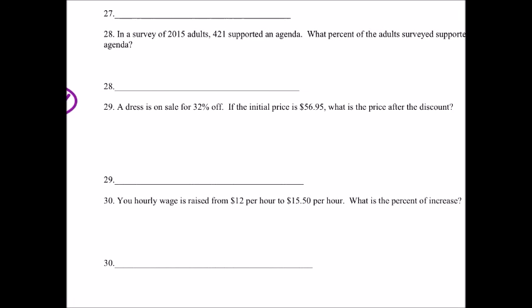Problem 29: A dress is on sale for 32% off. If the initial price is $56.95, what is the price after the discount? So the 32% off, once we figure that out, we're going to have to subtract that from the $56.95.